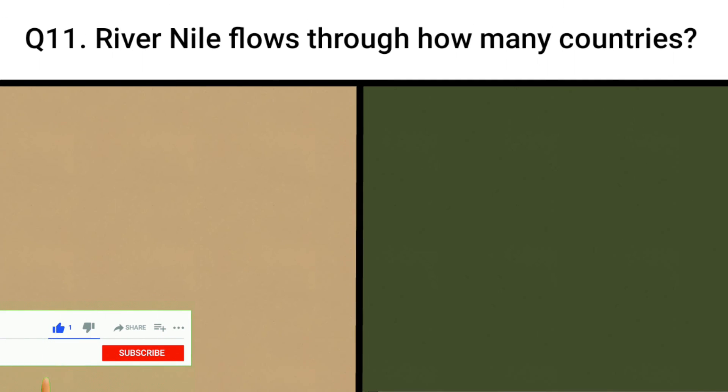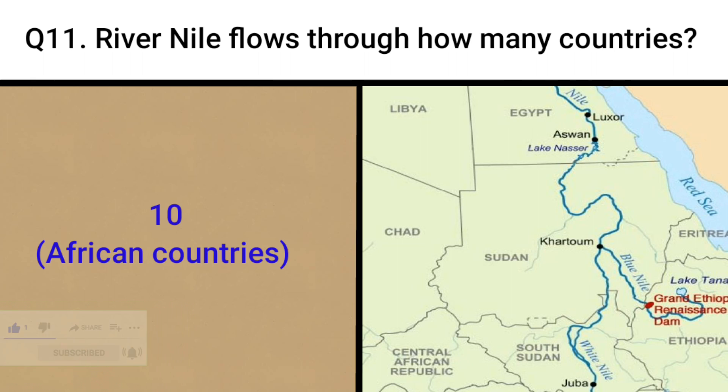River Nile flows through how many countries? 10 African countries.